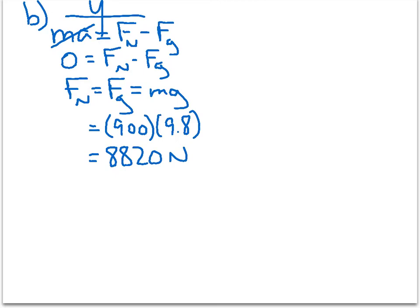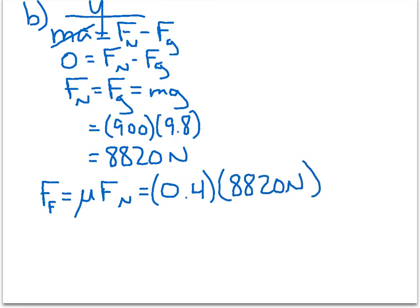So that's the normal force, which we're not looking for, but we do need, because we're trying to find the frictional force. So the force of friction is mu Fn, which we're told mu. Mu is 0.4, according to the problem, that's a given. Our normal force we just found is 8820 newtons. So if we multiply those together, we will get a frictional force of 3528 newtons. That is part B.